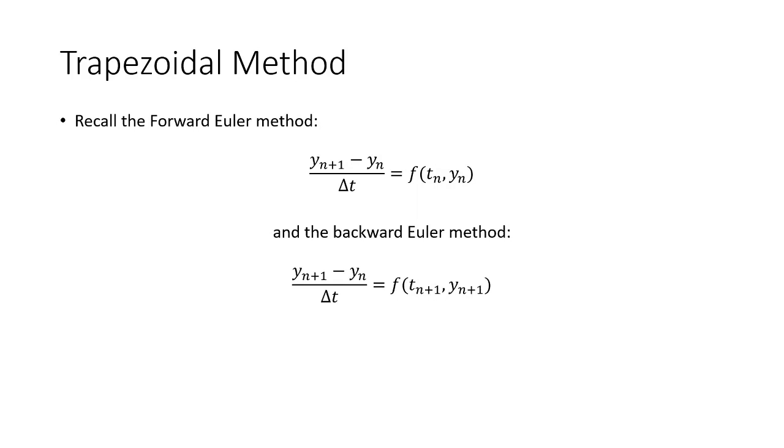So if you remember, the forward Euler method is an explicit solution scheme where our derivative is modeled as y of n plus 1 minus y sub n over delta t, and then that's all equal to the function of t sub n and y sub n.